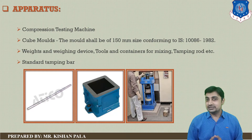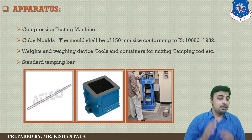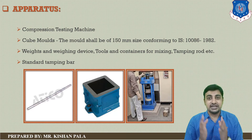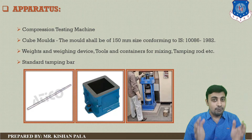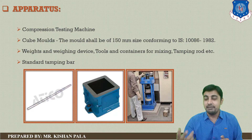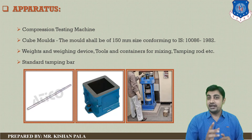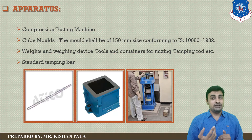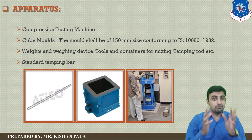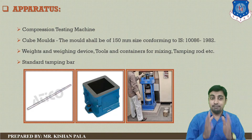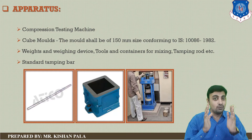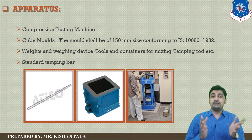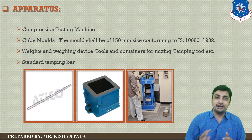Let us discuss the apparatus for finding the strength of the concrete mass. For finding the hardened properties, we mainly require the Compression Testing Machine (CTM), the cube specimen mold, and a standard cube size. For compressive strength, the standard cube size is 150 mm × 150 mm × 150 mm, or a cylindrical specimen with 150 mm diameter and 300 mm height. We also require a weighing machine, a tamping rod for compaction, and containers for mixing.